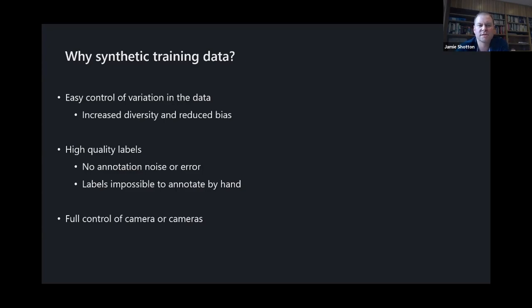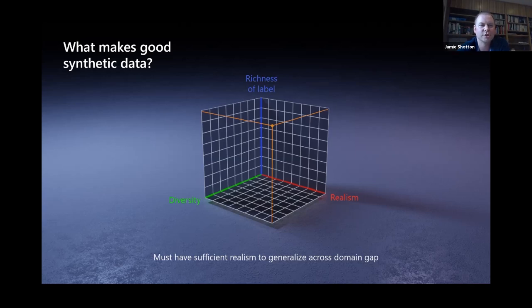Secondly, you can get really high quality labels. There's no error in the annotation. There's no noise. And perhaps more interestingly, you can generate labels that are impossible or incredibly expensive to annotate by hand. And if you're dealing with devices like HoloLens, where you've got funny cameras in different parts of the spectrum, depth cameras for example, or multi-camera setups, you can very quickly and easily get full control of those and render exactly what you'd like. But to make synthetic data good, you really need to work across three different axes. We've talked about diversity and the richness of label, but of course realism is absolutely critical. You must have sufficient realism to generalize across the domain. It doesn't mean necessarily you have to be able to pass a visual Turing test. But you do need to be able to generalize. And unfortunately at the moment, the best way we know to do that is through empirical testing.